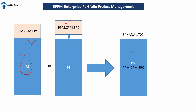After S4 HANA version 1709, all these modules became part of the core and there is no need for separate licensing for any specific module — everything comes with the S4 HANA license only.